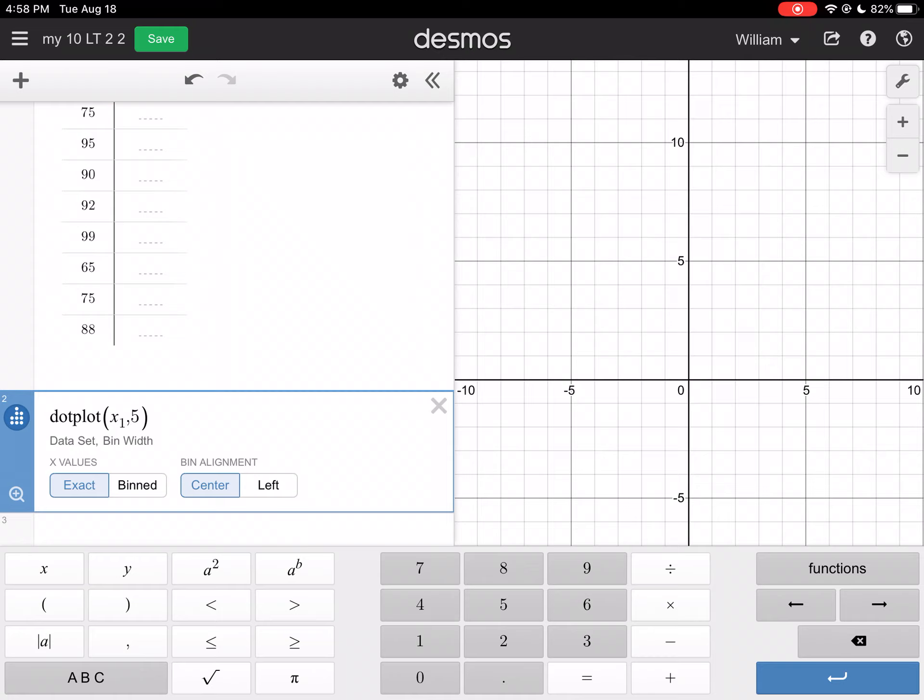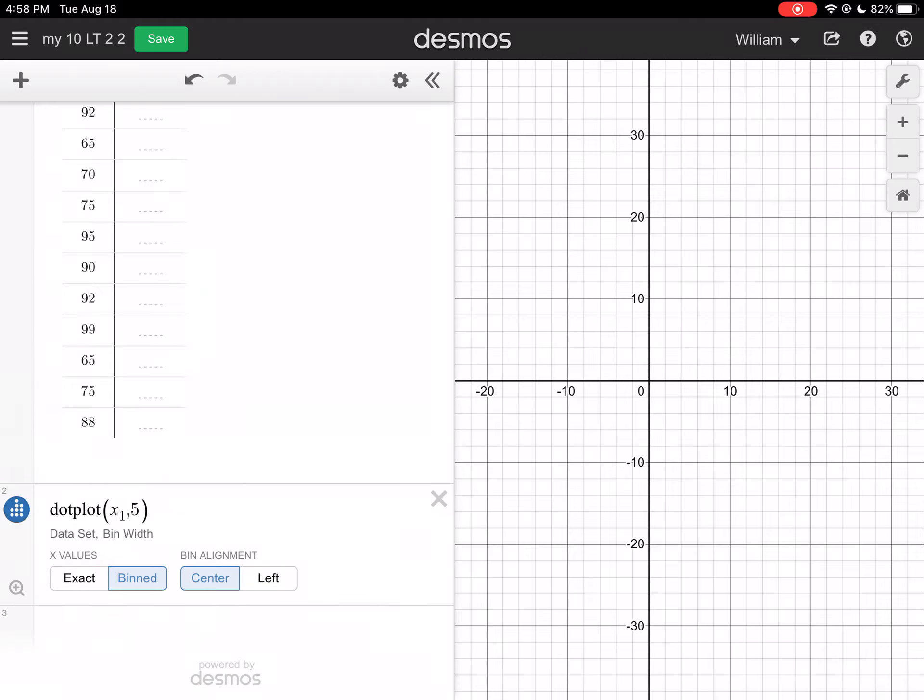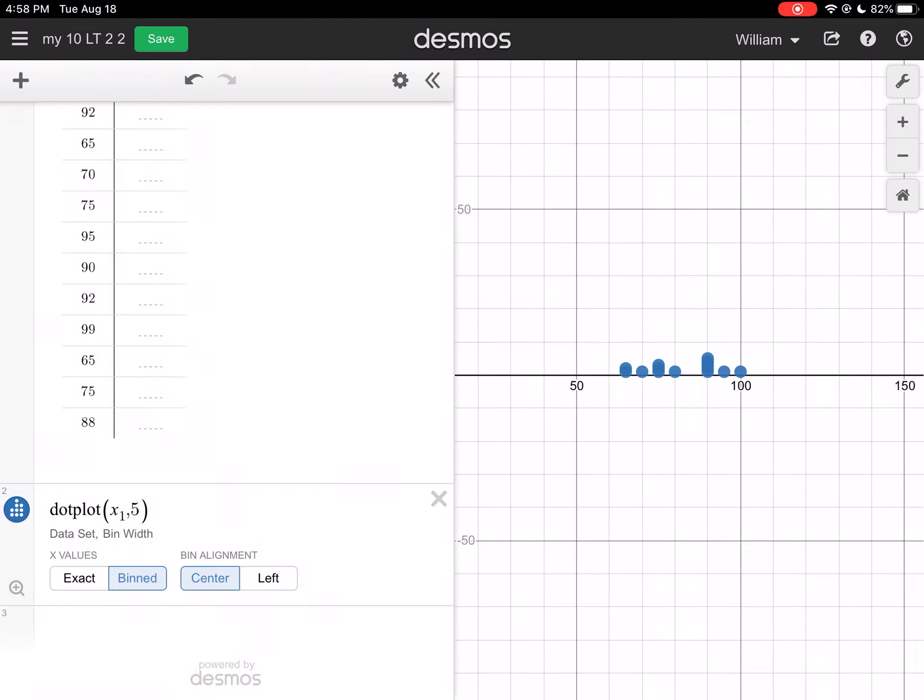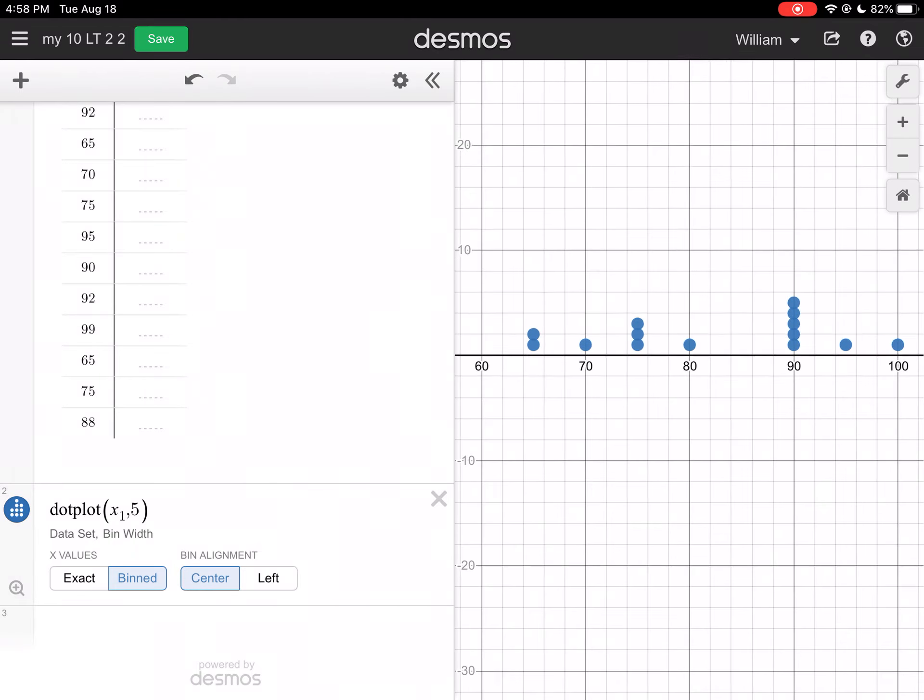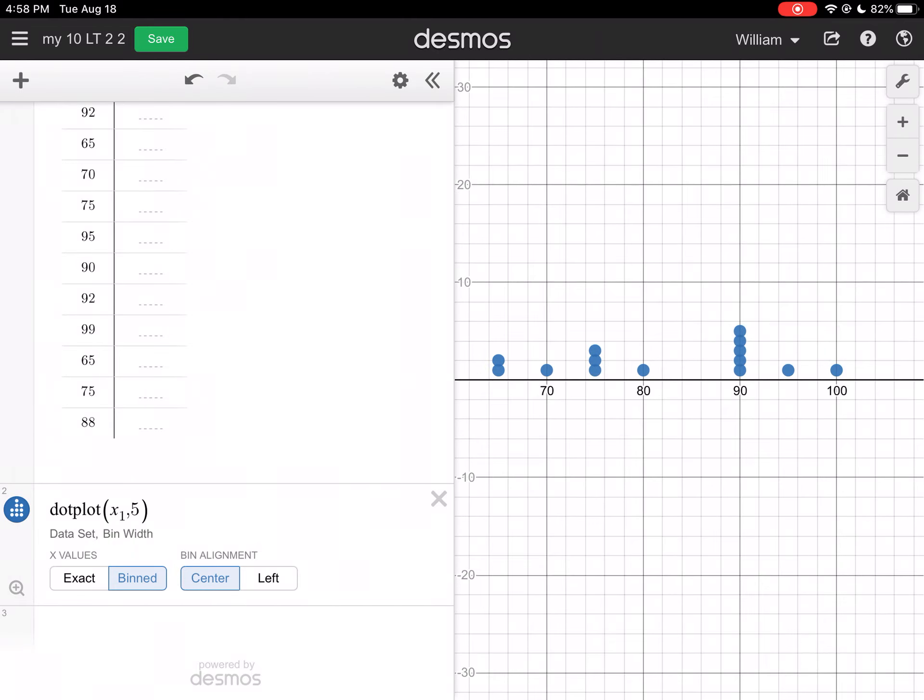Well, instead of putting one, let's put in five. Now notice we've got some answers. We've got some choices here. My X value, I'm going to click on bins. That way it's going to put them together. And I'm going to put my bin in the center.